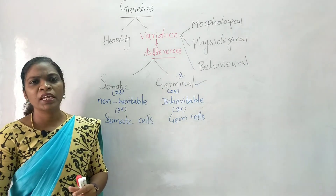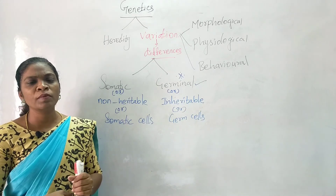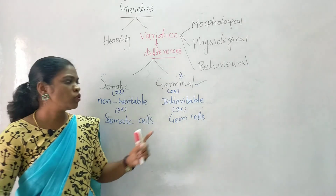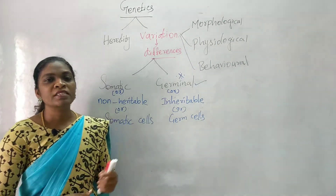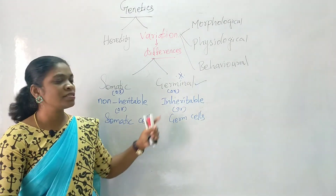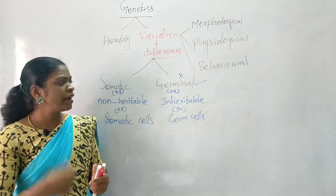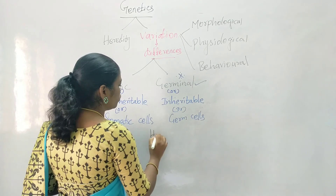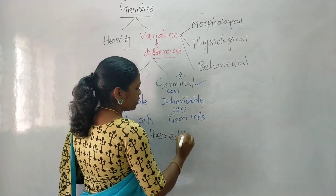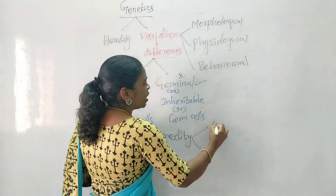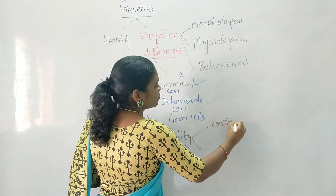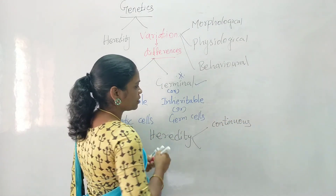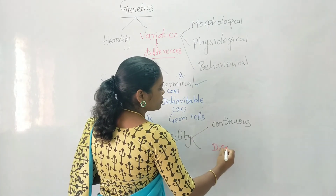Germinal variations affect the sex chromosomes. For example, genetic disorders will pass on to the next generation, so those types of variations are known as genetic or inheritable variations. We can also classify variation into two more types based on heredity: continuous variation and discontinuous variation.